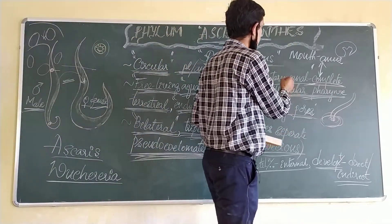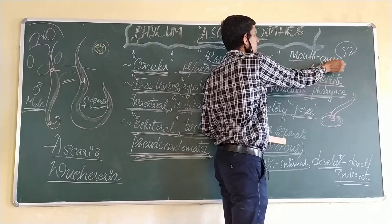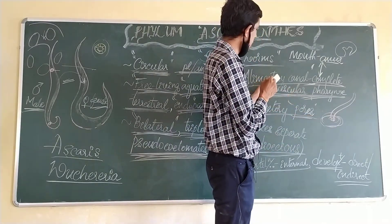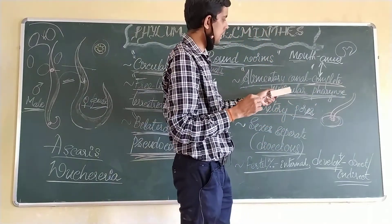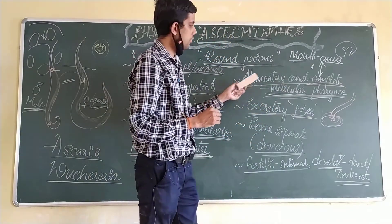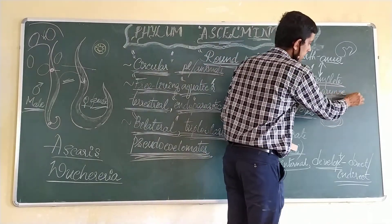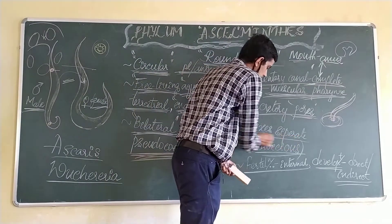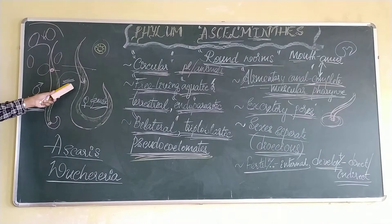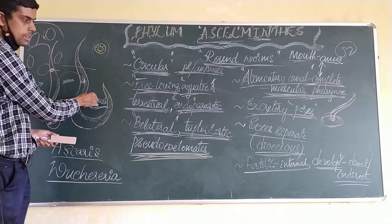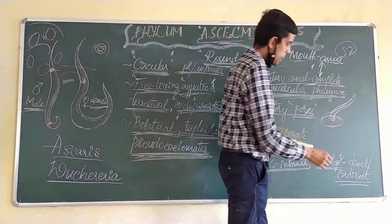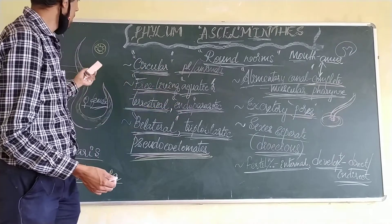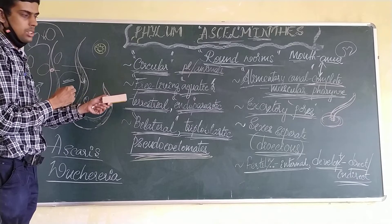The alimentary canal has a complete digestive system with mouth and anus. The excretory system has an excretory pore — excretory wastes are expelled out through a tube which ends in a pore called the excretory pore. The sexes are separate, that is dioecious — males are shorter and females are longer. Fertilization is internal. Development may be direct or indirect; the young ones may resemble the parents or look different.